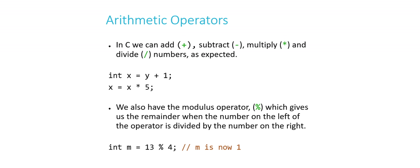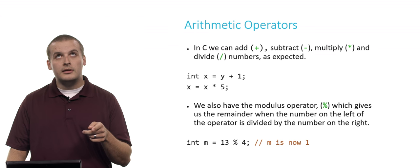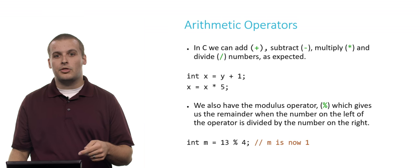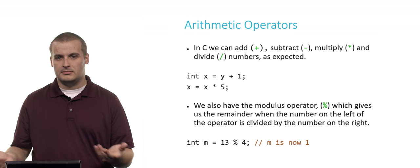There's another operator that you've probably not heard called this, but you've certainly worked with in the past if you remember your days of long division way back in grade school. It's called the modulus operator. What modulus does is it gives you the remainder when you divide two numbers together. So if I say 13 divided by 4, what's the remainder? That value would be calculated by the modulus operator. So int m equals 13 mod 4, and m's value is now 1. 4 goes into 13 three times with a remainder of 1.